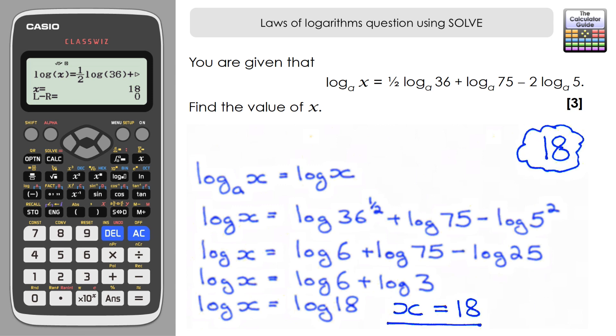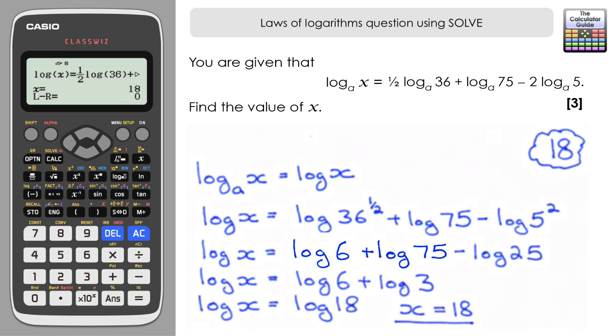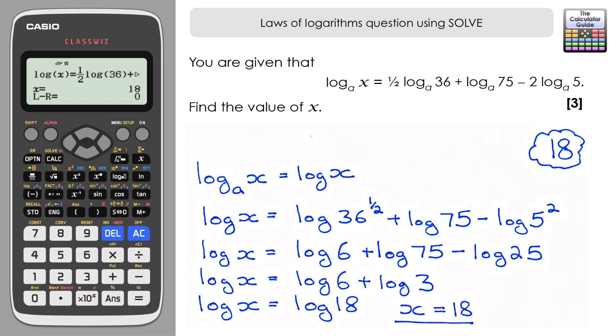It's worth noting I could have done the second to last step the other way around. I could have done log 6 times 75, which would have given me 450, so I would have had logarithm of 450 minus logarithm of 25, and would have divided 450 by 25, which gives me 18, so I've still got the same result I was expecting.